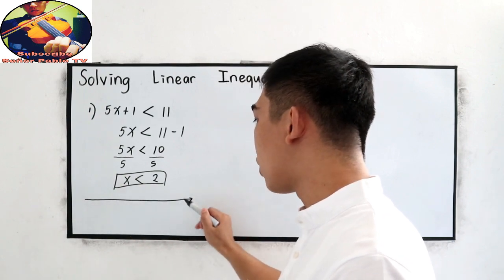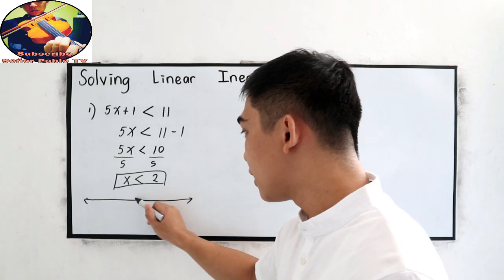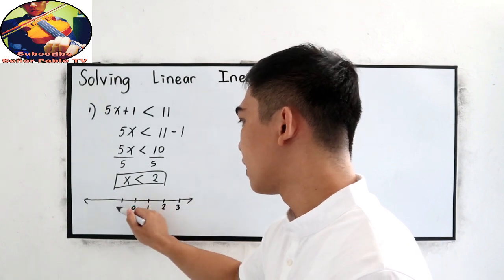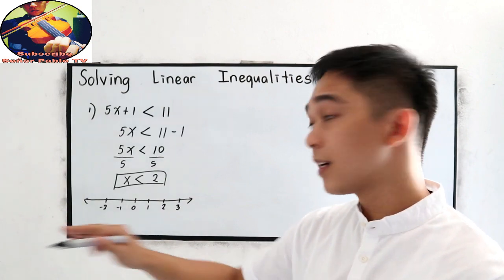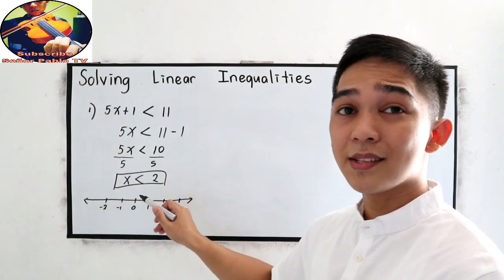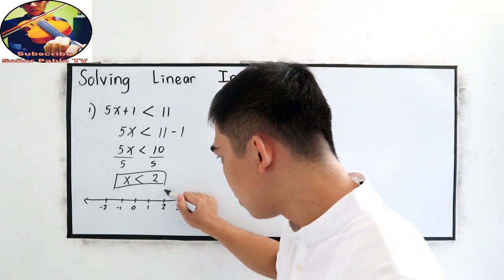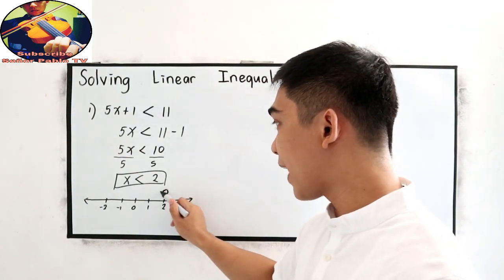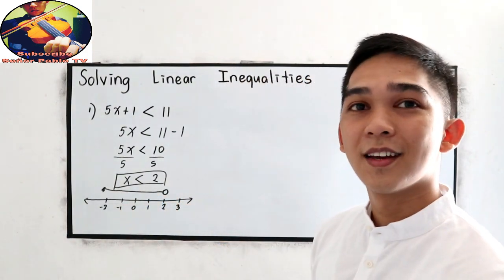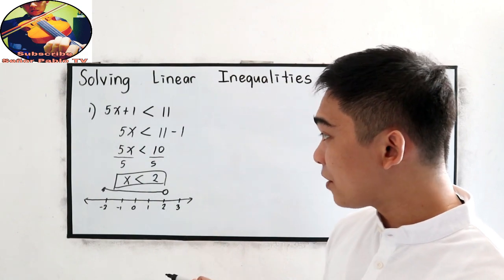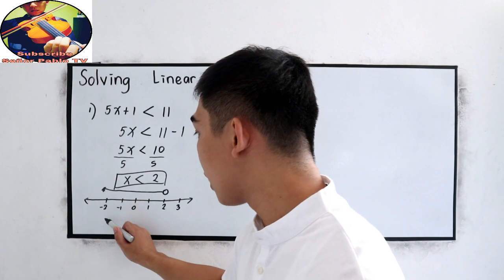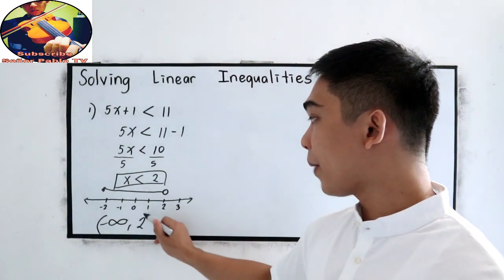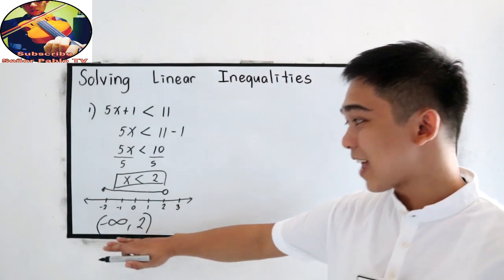Let us graph on our number line to find the interval notation. The number line shows 0, positive 1, positive 2, positive 3, negative 1, negative 2, and so on. Since x is less than 2, the value 2 is not included, so we leave it open going to negative infinity. Our interval notation for the final answer is open negative infinity to open positive 2.